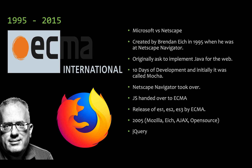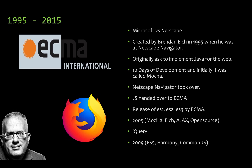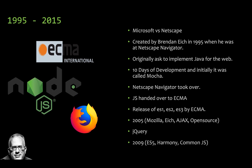JavaScript had a boost in 2009. In 2009, there were two key developments: ES5 became a standard version — ECMAScript moved from ES3 to ES5. Also, the CommonJS project emerged, which was a standard for using JavaScript outside the browser.